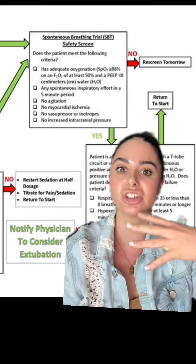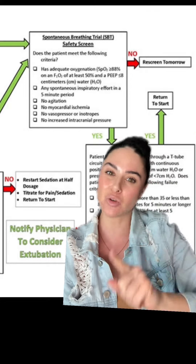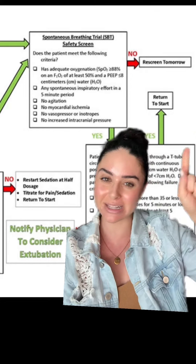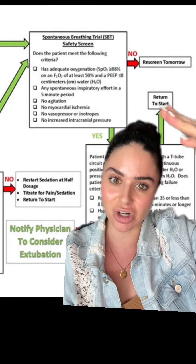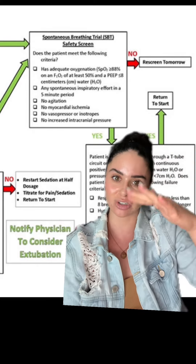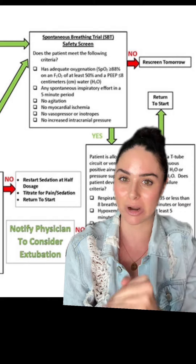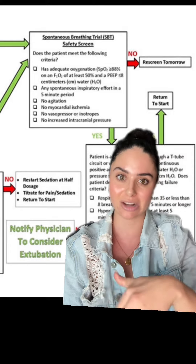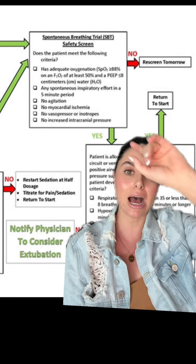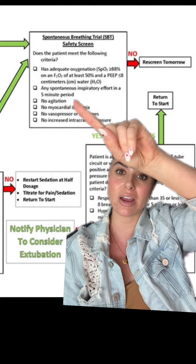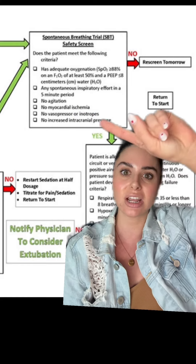Are they showing that they have spontaneous inspiratory effort in a five-minute period, meaning they are initiating some of their own breaths? Now if you have your respiratory rate set too high — let's say the rate is set at like 30 — your patient may not show this, so you may have to talk to a provider about dropping that rate down to actually see some spontaneous effort.